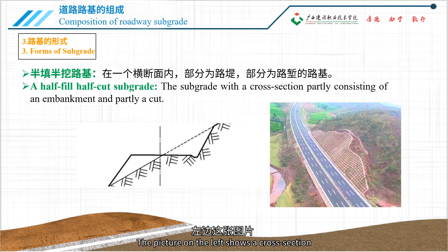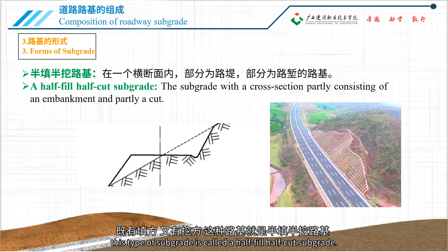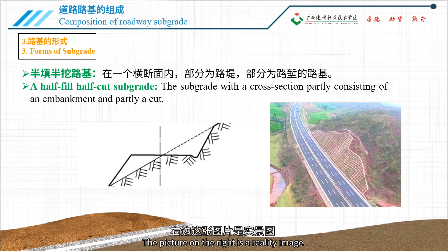The picture on the left shows a cross-section where there is both fill and excavation. This type of subgrade is called a half-fill, half-cut subgrade. The picture on the right is a reality image.